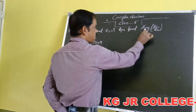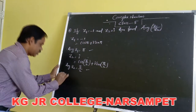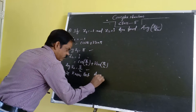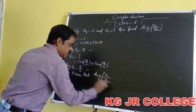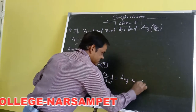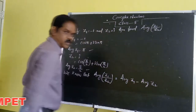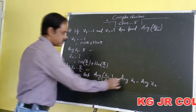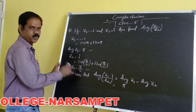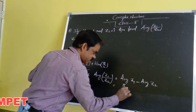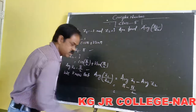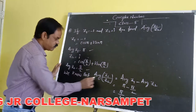According to the question, find the argument of Z1 by Z2. We know that the argument of Z1 by Z2 is equal to argument of Z1 minus argument of Z2. The argument of Z1 is pi and the argument of Z2 is pi by 2. So pi minus pi by 2 is equal to pi by 2. Therefore the argument of Z1 by Z2 is equal to pi by 2.